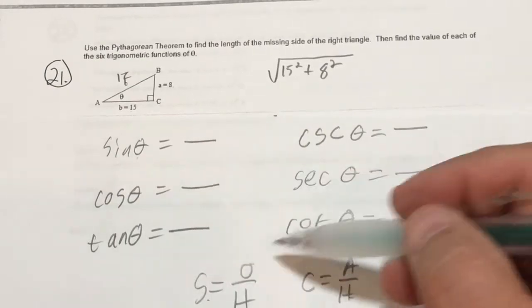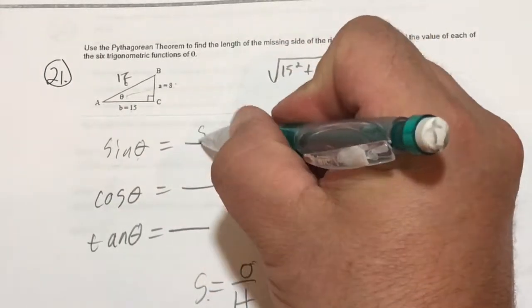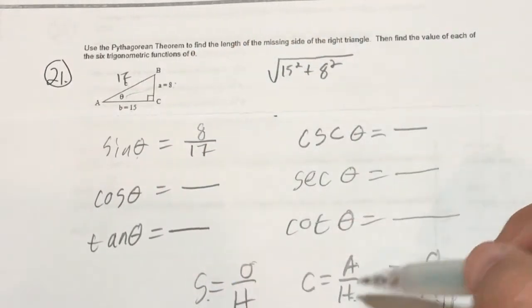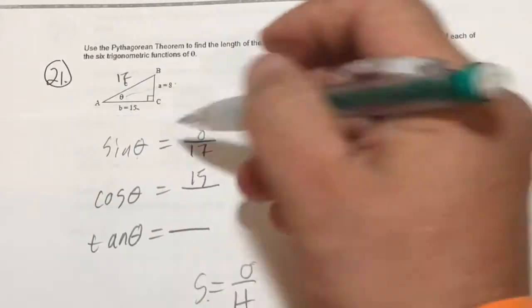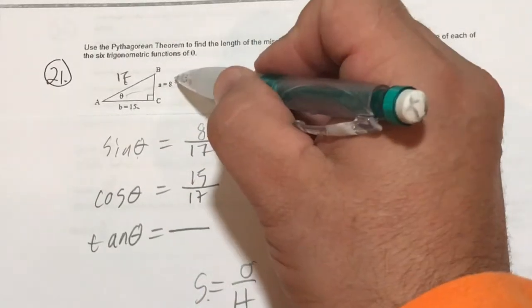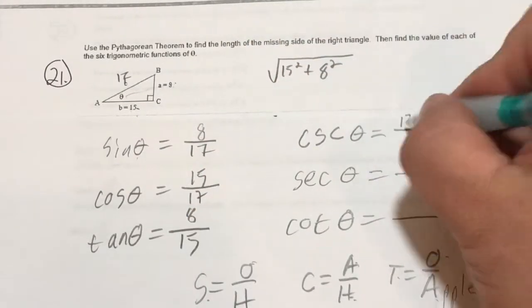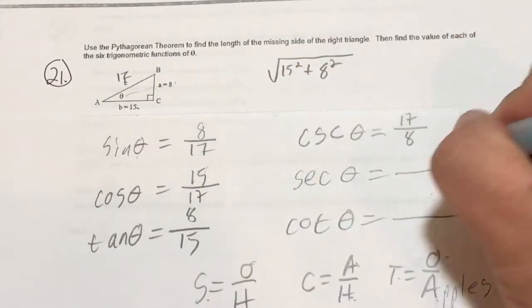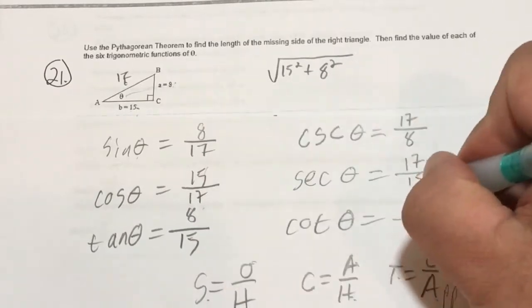So here we go. Sine is opposite over hypotenuse — opposite of theta is 8, the hypotenuse is 17. Cosine is adjacent over hypotenuse — the adjacent side is 15, and the hypotenuse is 17. Tangent theta is opposite over adjacent — 8 over 15. The reciprocal functions are just flipped: cosecant is 17 over 8, secant is 17 over 15, cotangent is 15 over 8.